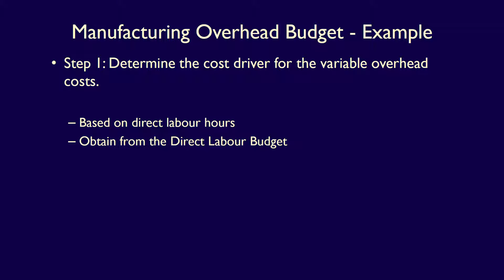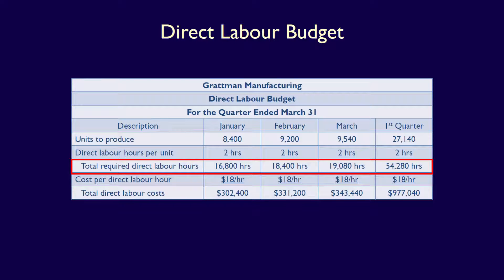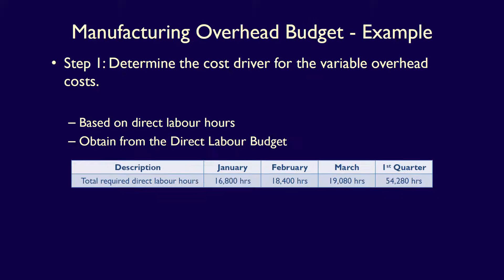We'll obtain this information for Gratman through the direct labour budget. The total required direct labour hours is what we need: 16,800 hours in January, 18,400 hours in February, 19,080 hours in March, and 54,280 hours in the first quarter. Note that the variable costs may have a different cost driver, such as direct labour costs, machine hours, or even units produced, but for Gratman Manufacturing we're using direct labour hours.